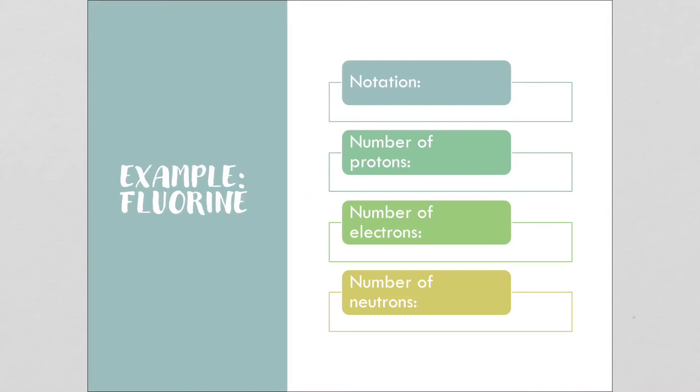Our next example is fluorine. Fluorine's symbol is F. We look up on the periodic table for its mass number, which is 19, and its atomic number is 9. The number of protons is 9, the number of electrons is 9, and the number of neutrons is 19 minus 9, so 10.